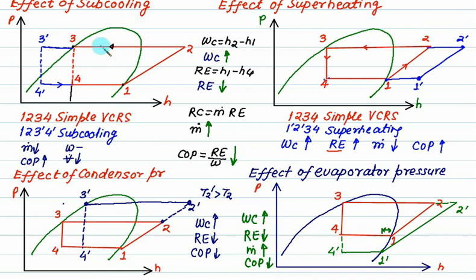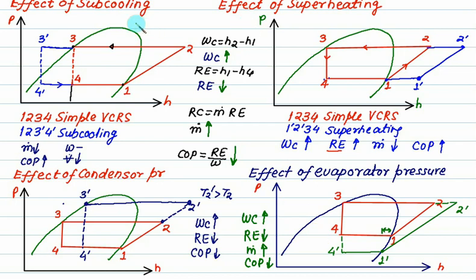The best VCRS cycle is sub-cooling plus super-heating, with a low difference between condenser and evaporator pressure. When evaporator pressure is not too low and we have both super-heating and sub-cooling, that is the optimal cycle for VCRS.